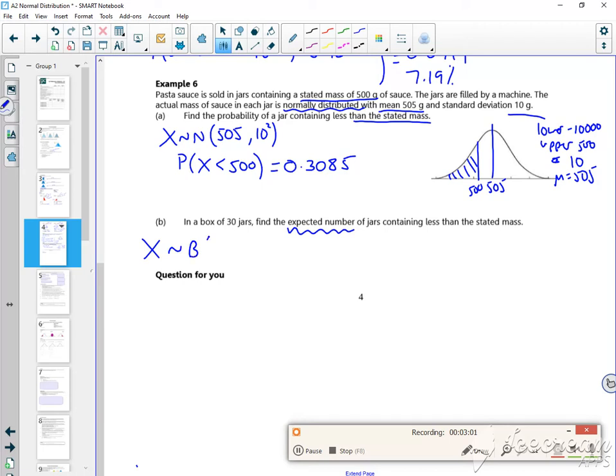So I'm kind of switching now to a binomial, which would be X follows a binomial. N is 30. And my probability of success is this up here. So I'm actually using that probability. Now your expected number is NP. So that would be 30 times by 0.3085.